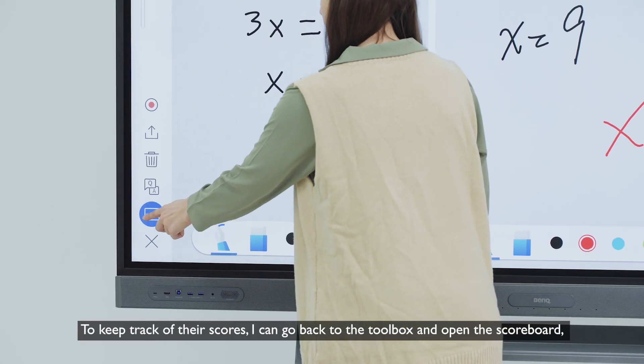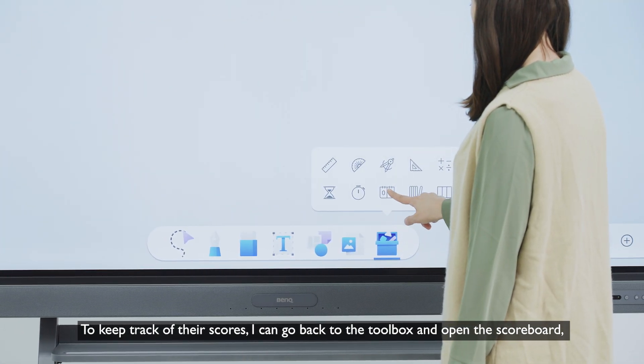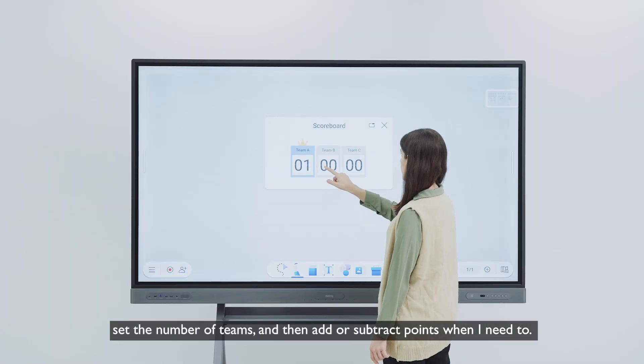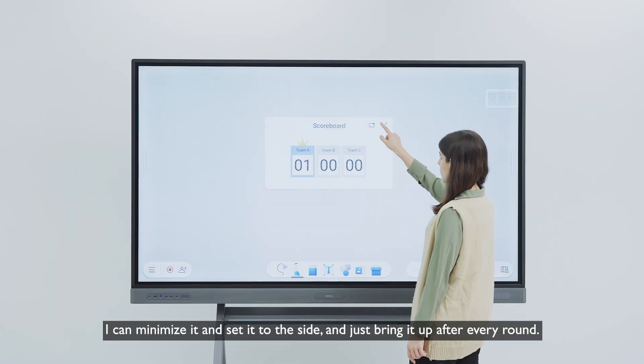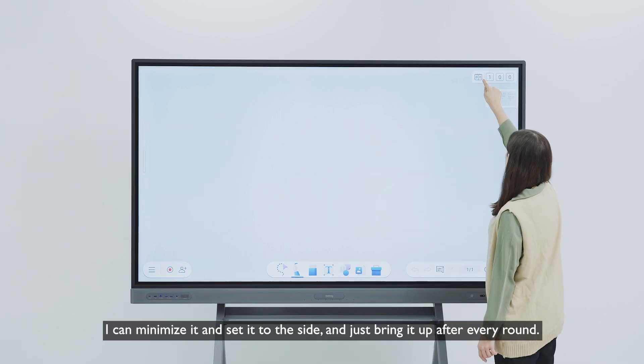To keep track of the scores, I can go back to the toolbox and open the scoreboard, set the number of teams, and then add or subtract points when I need to. I can minimize it and set it to the side and just bring it up after every round.